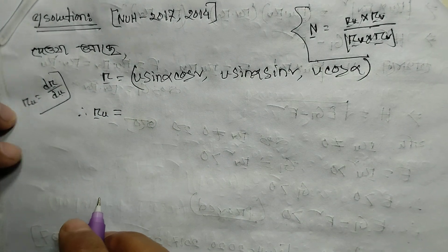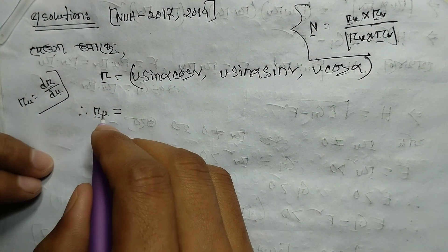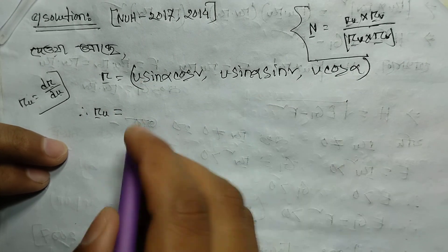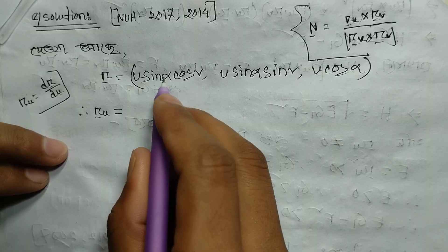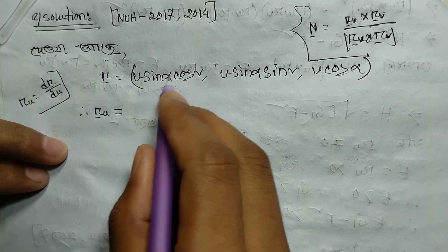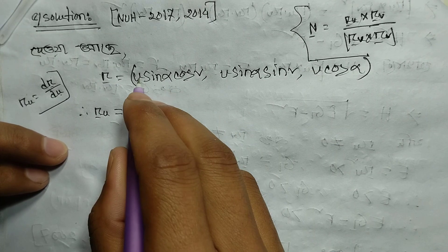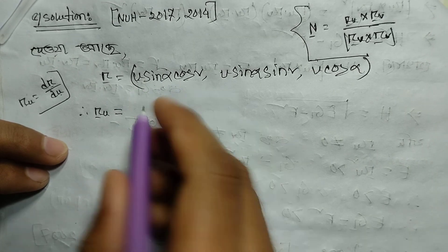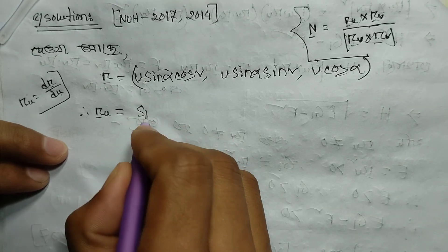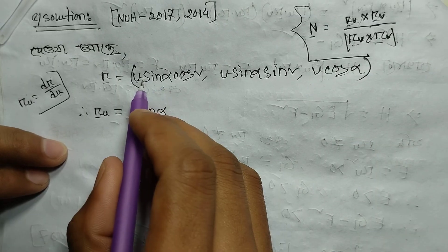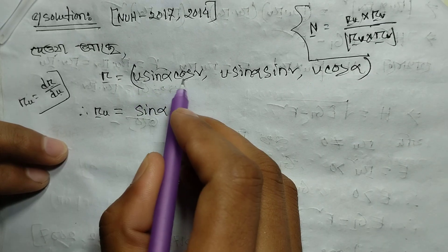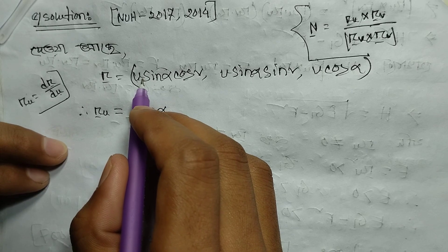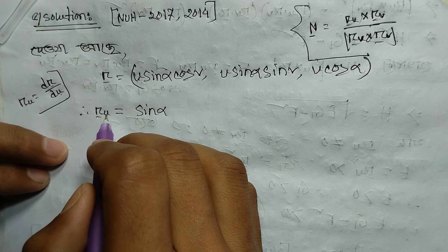Differentiating with respect to u: the x-component differentiates to give the first term dropping down, so we get the partial derivative in u.